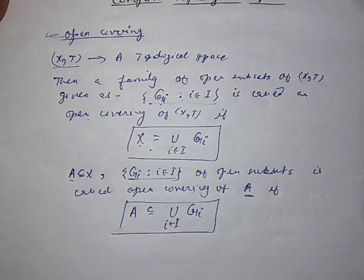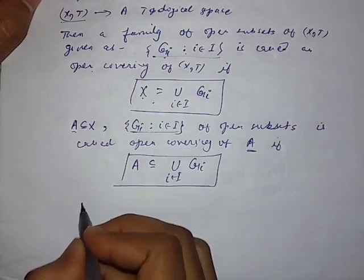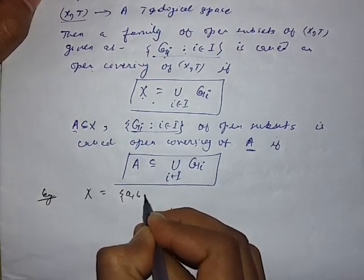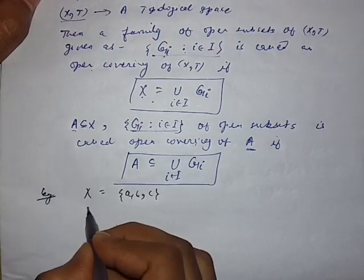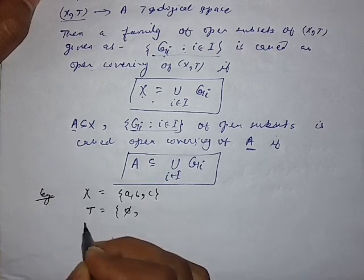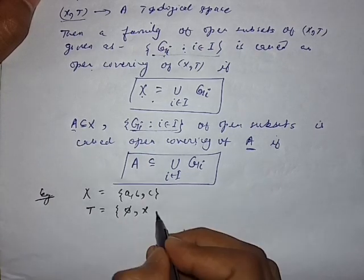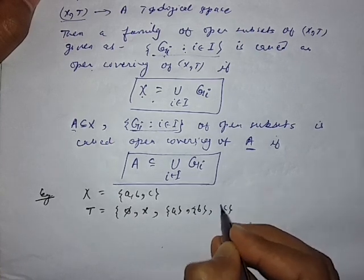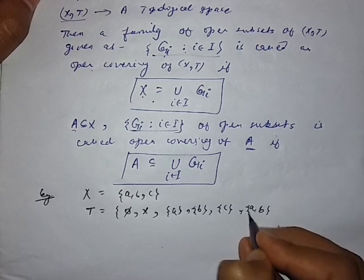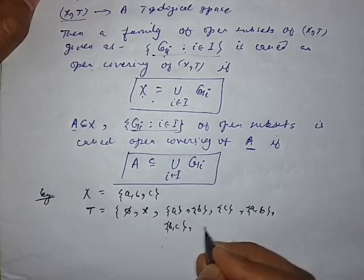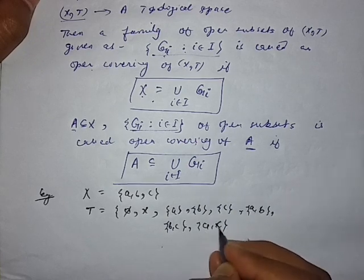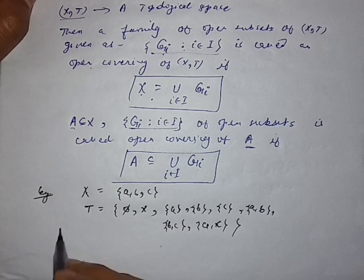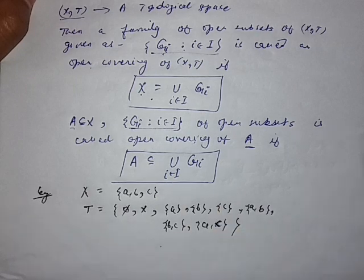Now we take an example to understand clearly. Let X be any set with three elements a, b, and c. We consider a topology containing: φ, X, {a}, {b}, {c}, {a,b}, {b,c}, and {a,c}. This is the largest topology from the set X, so this topology is called the discrete topology.